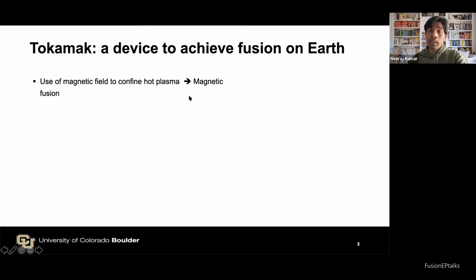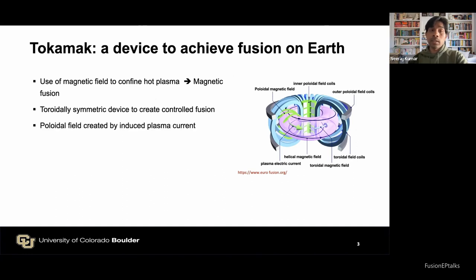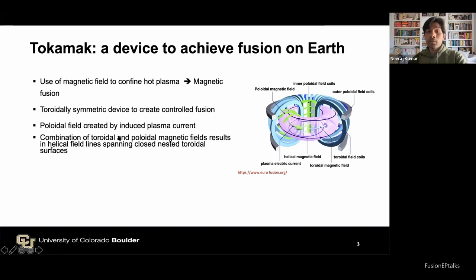On Earth we use a very large magnetic field to confine hot plasma away from material walls — this is known as magnetic fusion confinement. The device used to achieve this is the tokamak, a toroidally symmetric device. Since toroidal magnetic field alone leads to particle loss due to various drifts, an additional poloidal magnetic field is created by inducing plasma current via the central solenoid.